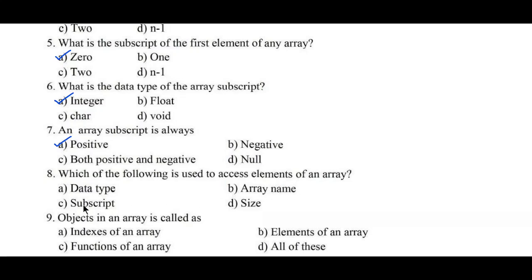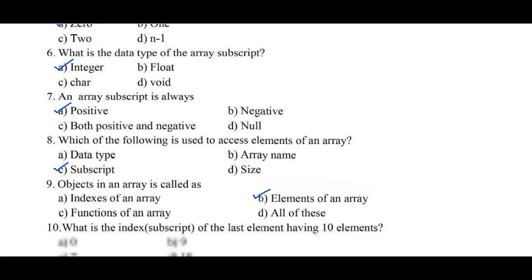Question number eight: which of the following is used to access elements of an array? Options: a) data type, b) array name, c) subscript, d) size. Each and every element of the array can be accessed with the help of subscript, hence option c is the right answer. Question number nine: object in an array is called — a) indexes of an array, b) elements of an array, c) functions of an array, d) all of these. Objects of an array are also called elements of an array, hence option b is the right answer.